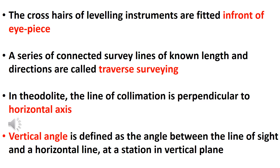The line of collimation, axis of telescope, parallel axis of bubble tube, and vertical axis have the following relationship: the line of collimation is perpendicular to the horizontal axis, and the axis of the bubble tube is perpendicular to the vertical axis.